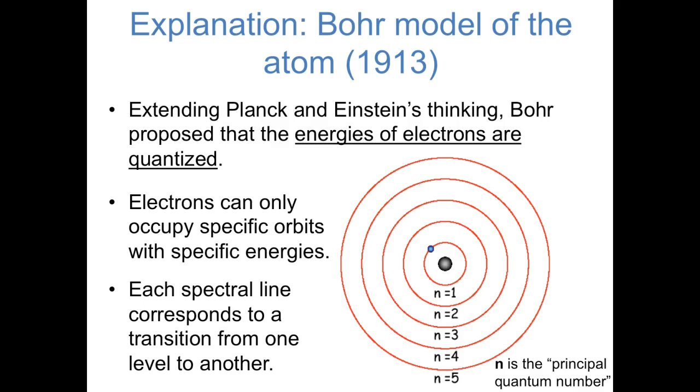We'll call N the principal quantum number, and we'll see plenty more of it as we get further into quantum mechanics. But for now, just be aware that in order to explain these atomic spectra, the electron can only have certain energy levels, only certain orbits. And each spectral line corresponds to the energy that's released when an electron drops down from a higher energy level to a lower energy level. For example, when an electron drops from N equals 3 to N equals 2, the excess energy that it loses is released as light.